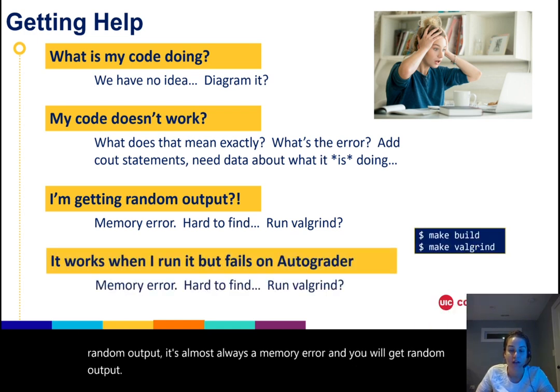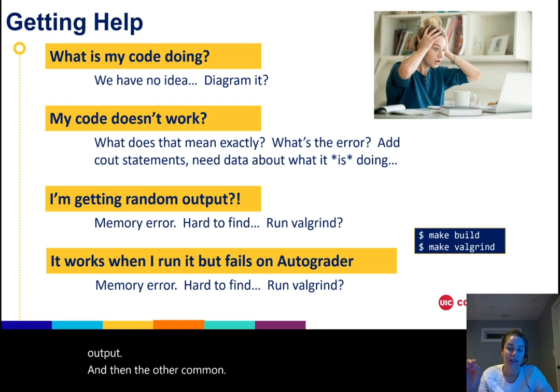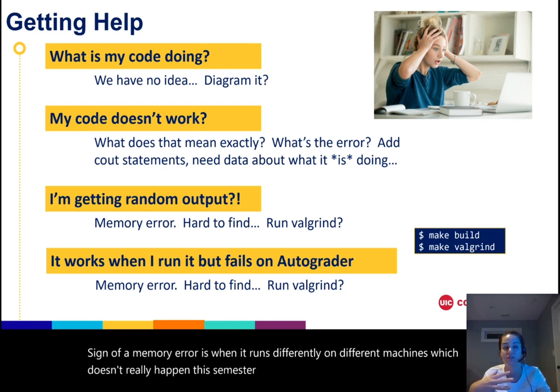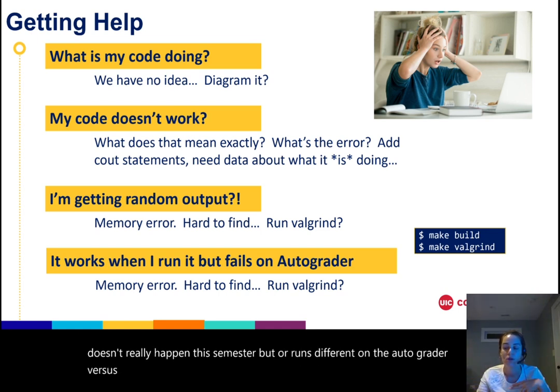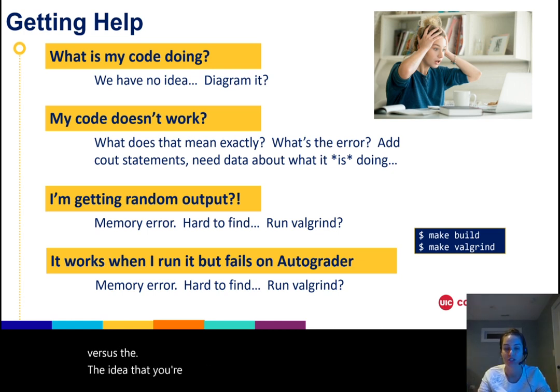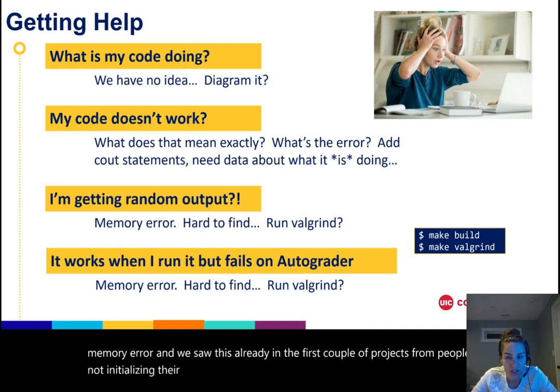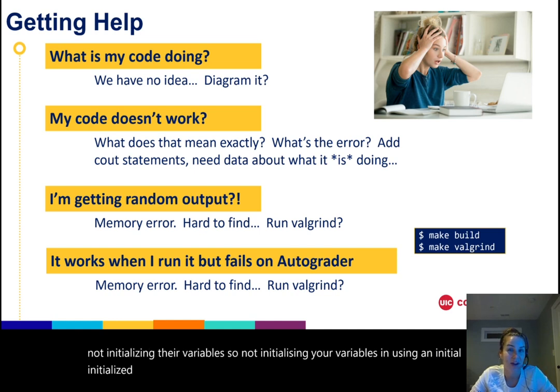And then the other common sign of a memory error is when it runs differently on different machines, or runs different on the autograder versus the IDE that you're using. That's another good indication that you have a memory error. And we saw this already in the first couple projects from people not initializing their variables. So not initializing your variables and using uninitialized variables is also a memory error, right? Because you don't know what behavior the code has on an uninitialized variable.